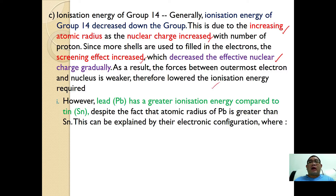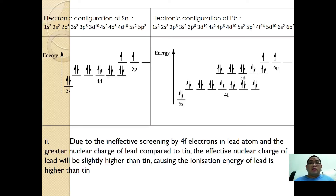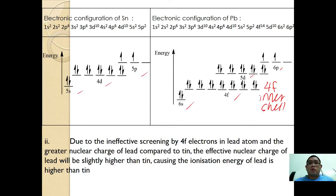However, if you look carefully, lead has a slightly higher ionization energy compared to tin, despite the fact that the atomic radius of lead is greater than tin. This can be explained by their electron configurations. Tin has 5s, 4d, and 5p valence electrons, while lead has 6s, 4f, 5d, and 6p. Lead has a 4f inner shell, and these 4f orbitals repel each other greatly, causing what we call ineffective screening. Therefore, the screening effect decreases and causes the effective nuclear charge to increase, which is why the ionization energy of lead is higher than that of tin.